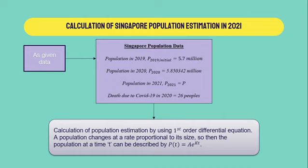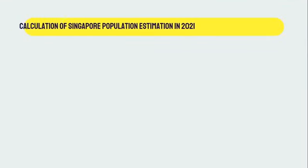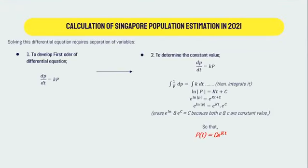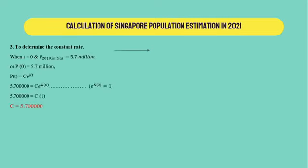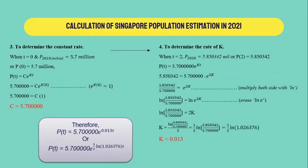The collected information is simplified into a table, and now we can start our calculation using a first-order differential equation. First, we develop the first-order differential equation as shown. Next, we determine the constant value by using integration and we get a new equation highlighted in red. Then, we calculate the constant rate using t equal to 0 and the initial human population of 5,700,000, and we get the value of c.